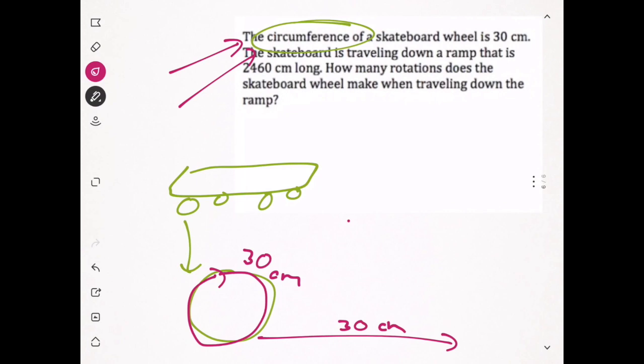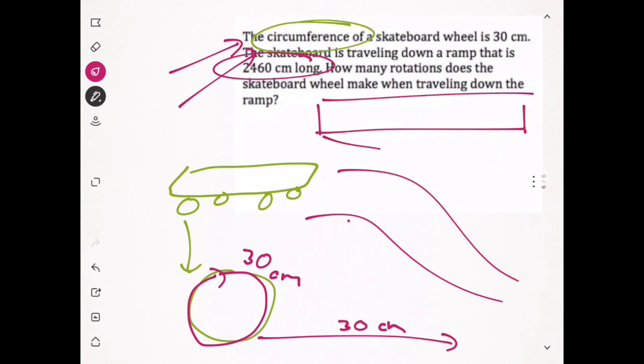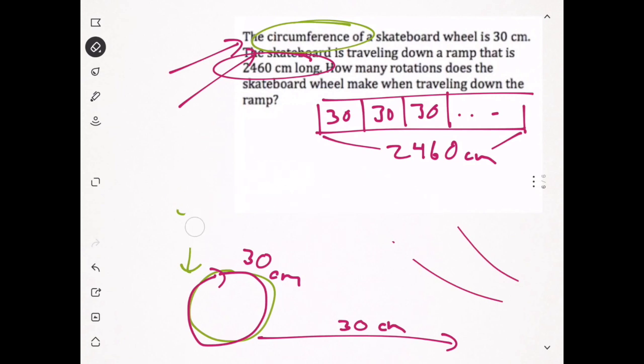The skateboard is traveling down a ramp that is 2460 centimeters long. How many rotations does the skateboard wheel make when traveling down the ramp? I'm going to bar model this. Here's our ramp, 2460 centimeters long. Each time the wheel turns, it goes 30 centimeters. We want to know how many 30 centimeters fit into 2460. That sounds like a division problem.